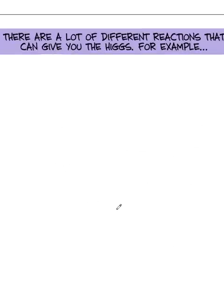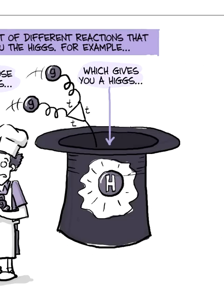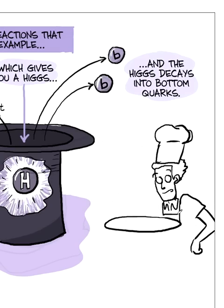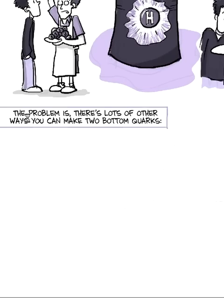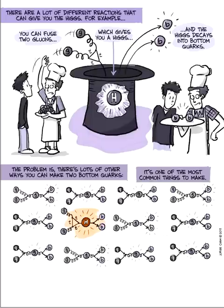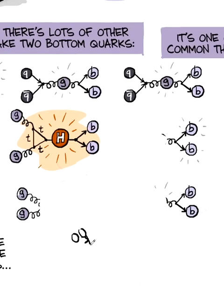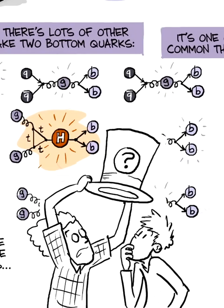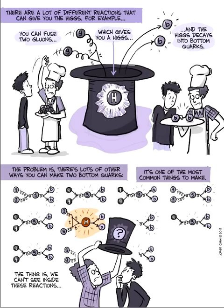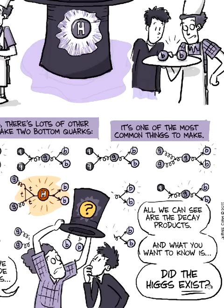So there's lots of different reactions that could give you the Higgs. For example one, is you could have two gluons, diffuse, give you a Higgs boson, and the Higgs could decay into two bottom quarks. The problem is, there's lots of other ways to make two bottom quarks. In fact, it's one of the most common things to make. You expect that to happen a million times more often from other kinds of processes than from the Higgs. The thing is, we can't see these reactions. We can't watch them and slow them down, reverse them. All we can do is see the reaction, the decay products from the reaction. So this part is all you see. And what you really want to know is, did this intermediate state exist?